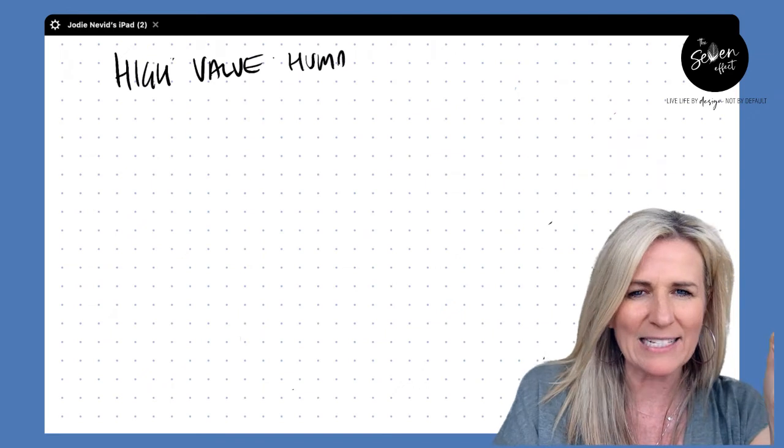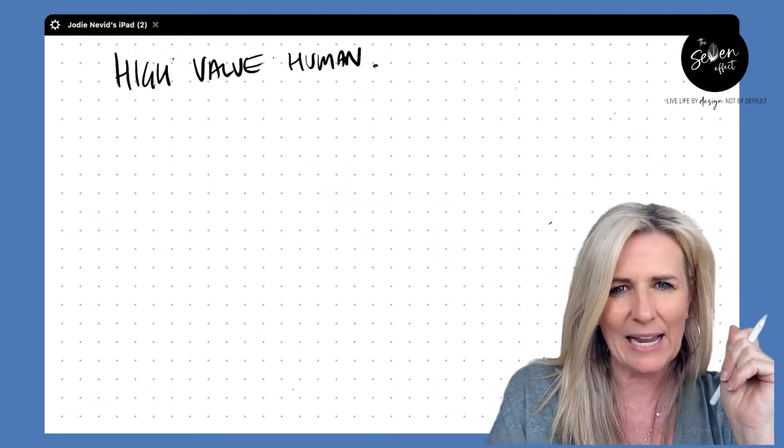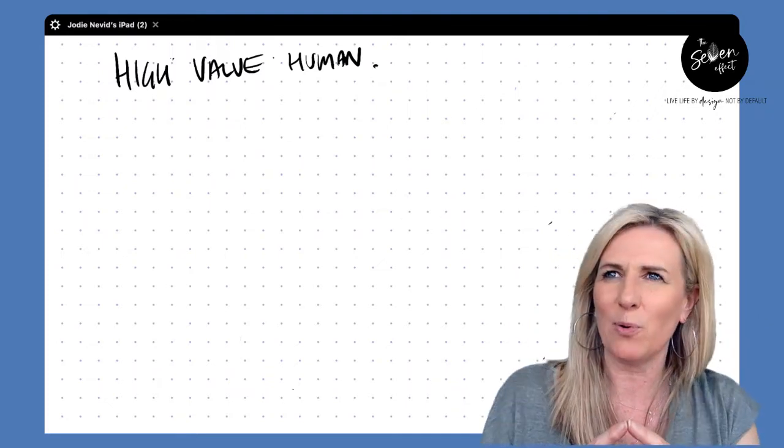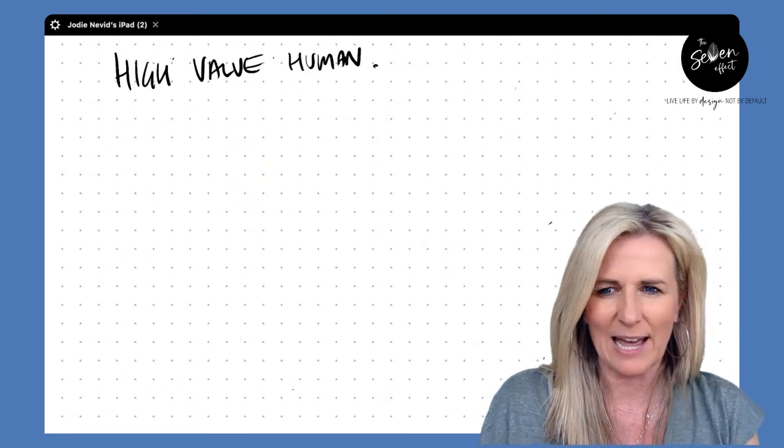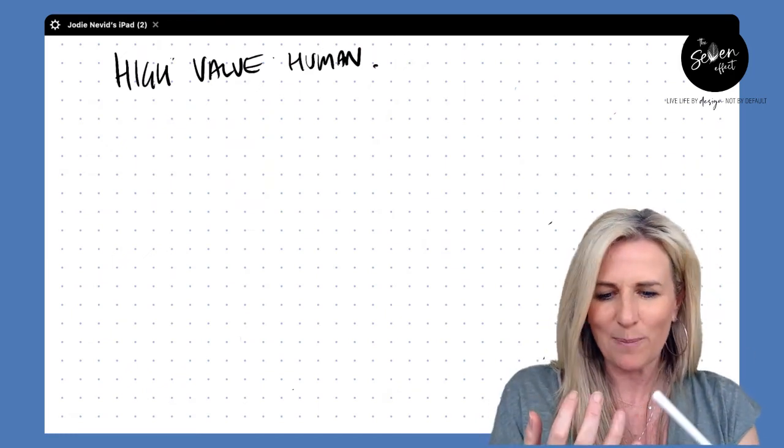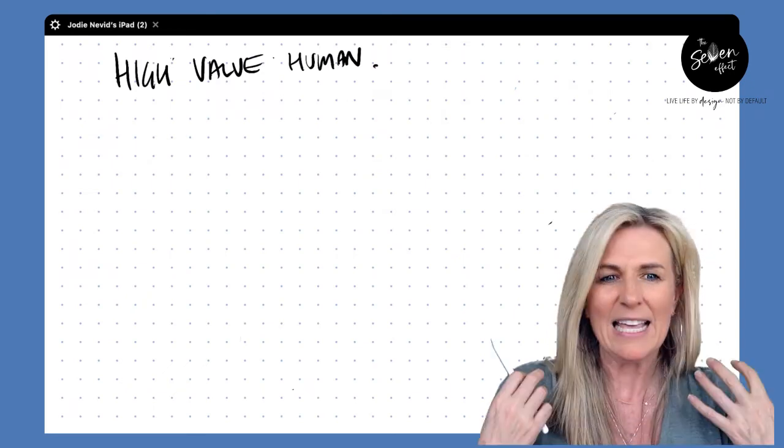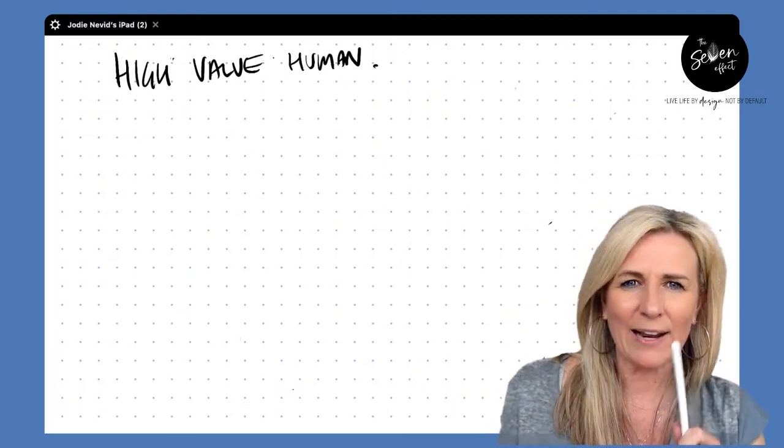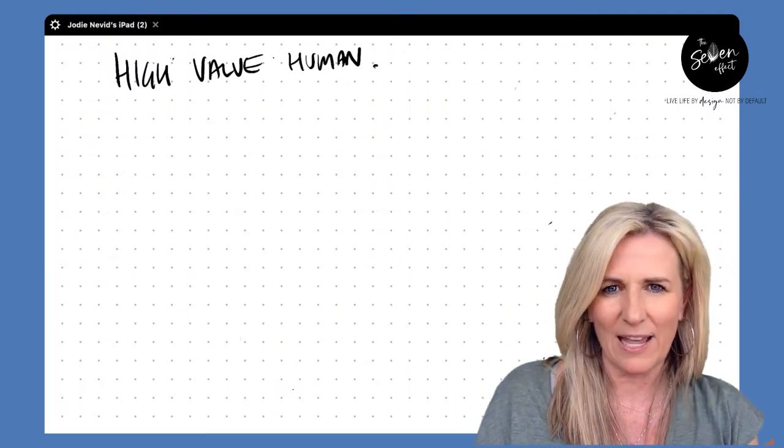And what I mean by that is the kind of human who can be an asset, not a liability in any situation. High value humans are the types of people who seem to just land on their feet, no matter what the circumstances are. They can win dream jobs, they can lead teams with ease, and they can launch businesses and have success right away. Why? Because they know how to get results and deliver value without excessive effort.